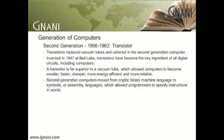New types of careers such as programmer, analyst, and computer systems expert came into being, and the entire software industry began with second generation computers. The first large-scale machines to take advantage of transistor technology were early supercomputers — Stretch by IBM and LARC by Sperry Rand. These computers, both developed for atomic energy laboratories, could handle an enormous amount of data, a capability much in demand by atomic scientists. The machines were costly, however, and tended to be too powerful for the business sector's computing needs, limiting their attractiveness. Only two LARCs were ever installed: one at the Lawrence Radiation Labs in Livermore, California — for which the computer was named, Livermore Atomic Research Computer — and the other at the U.S. Navy Research and Development Center in Washington, D.C.